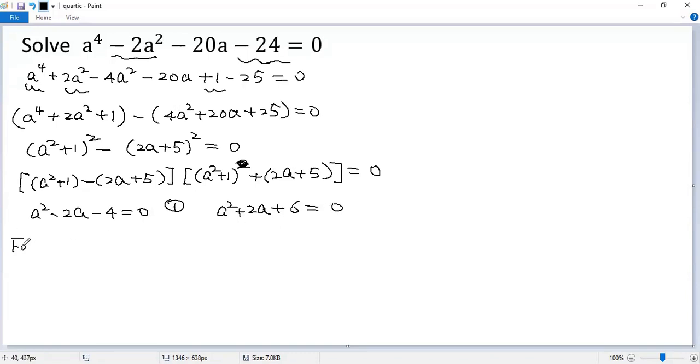So for the first equation, using the quadratic formula, we get a equals negative b, which is 2, plus or minus square root of b squared minus 4ac.